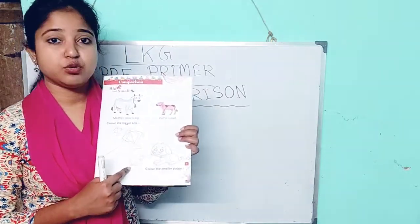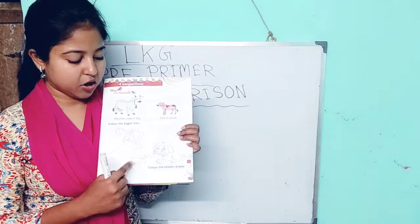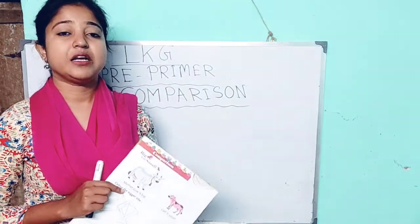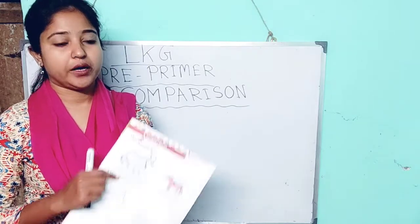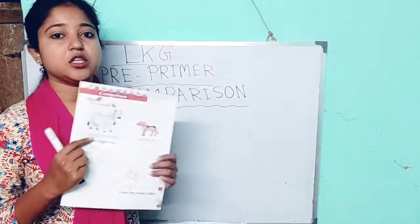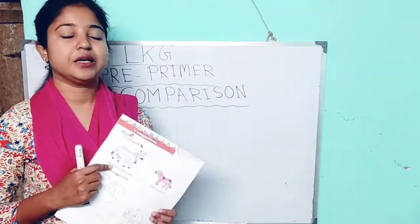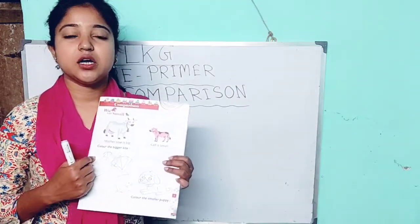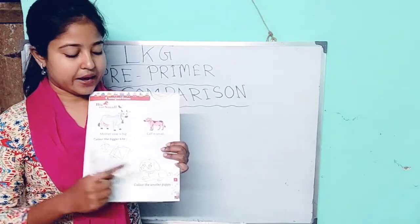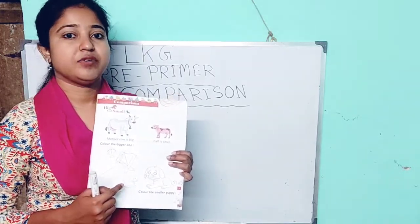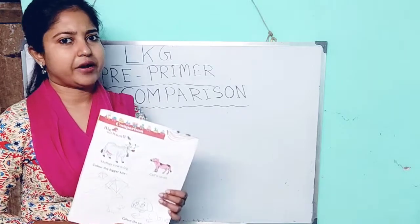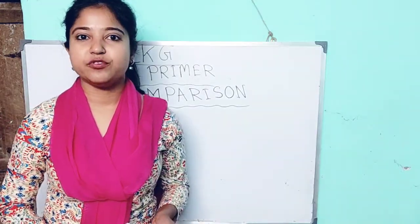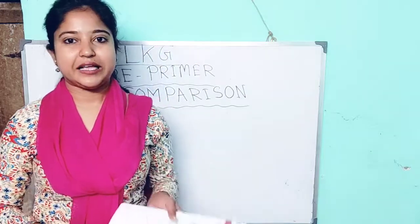Among these two dogs, this is a big dog and this is a small dog. You will color the small puppy. Among the kites, you will color the big one, and among the two puppies, you will color the small one — whatever color you like. I will check how beautifully you can color when I take the books.